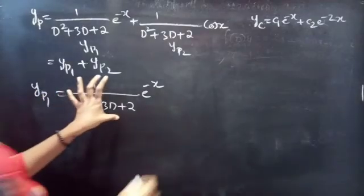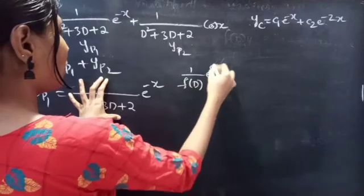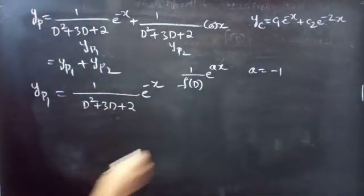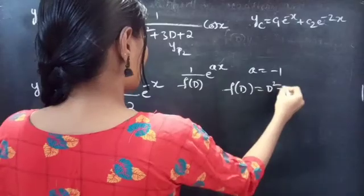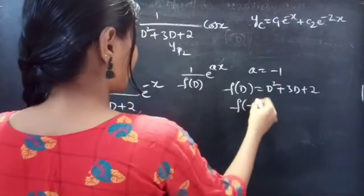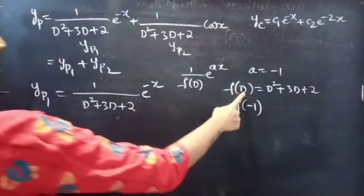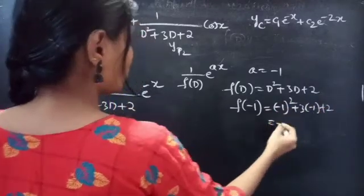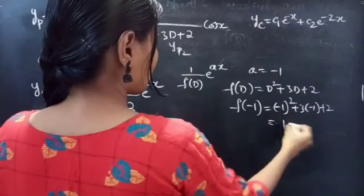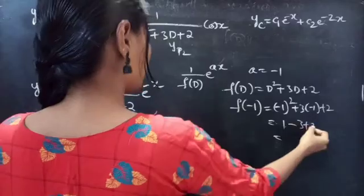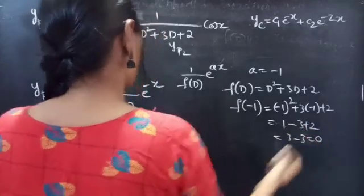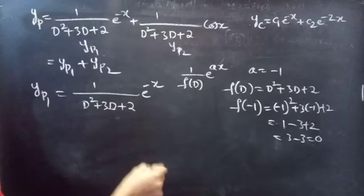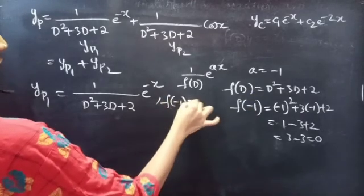Let's find yp1 first. yp1 = 1/(D² + 3D + 2) · e^(−x). This is of the form 1/f(D) · e^(ax) for a = −1. We have f(D) = D² + 3D + 2, so let's find f(−1): (−1)² + 3(−1) + 2 = 1 − 3 + 2 = 0. Since f(−1) = 0, the denominator is zero, so we cannot directly replace D by −1.